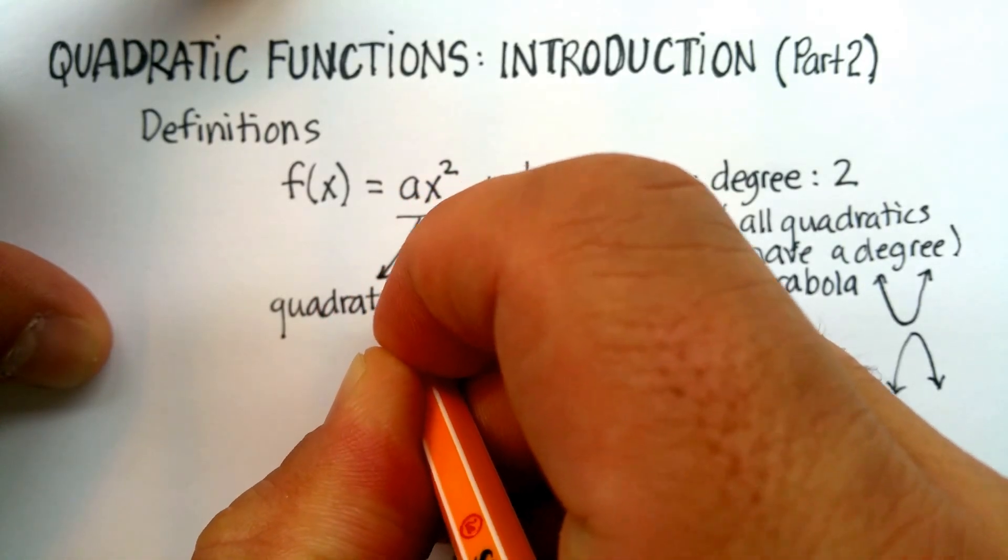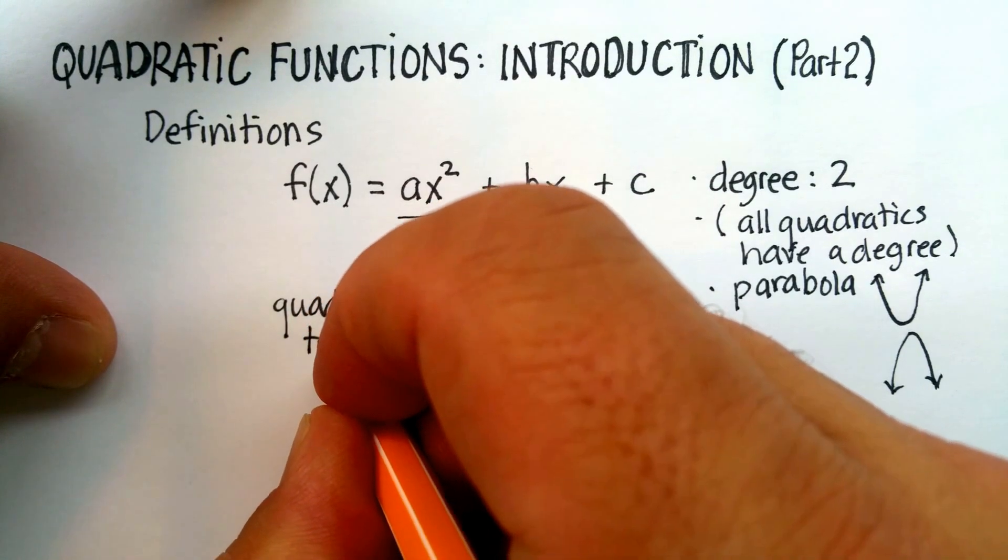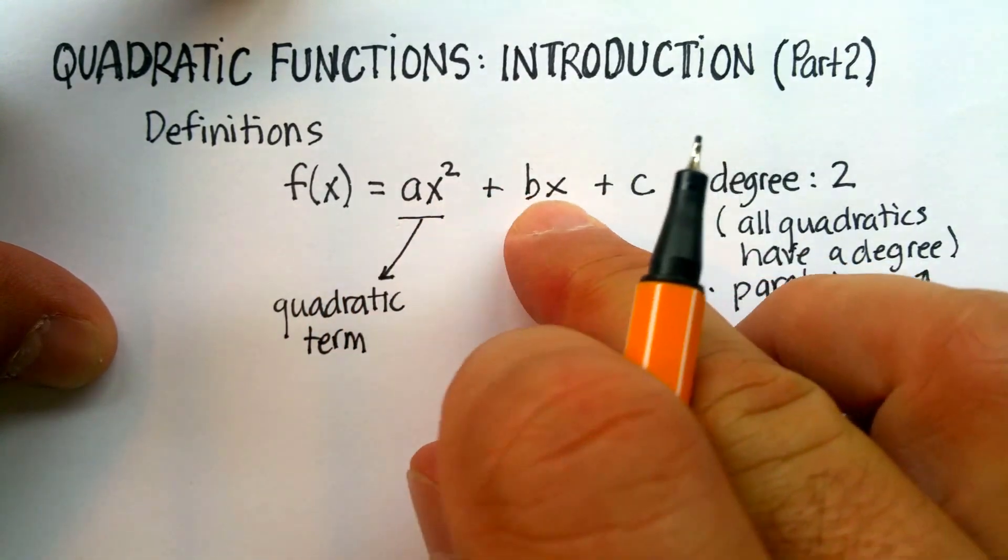And, again, that makes sense, doesn't it? Because the quadratic term has the degree of two. You really don't need the rest of this.